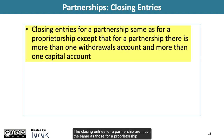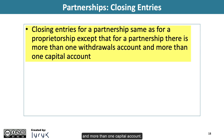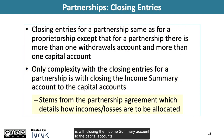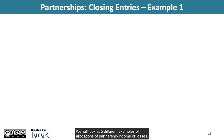The closing entries for a partnership are much the same as those for a proprietorship, except that for a partnership there is more than one withdrawals account and more than one capital account. The only complexity with the closing entries for a partnership is with closing the income summary account to the capital accounts. The complexity stems from the partnership agreement which details how incomes and losses are to be allocated.